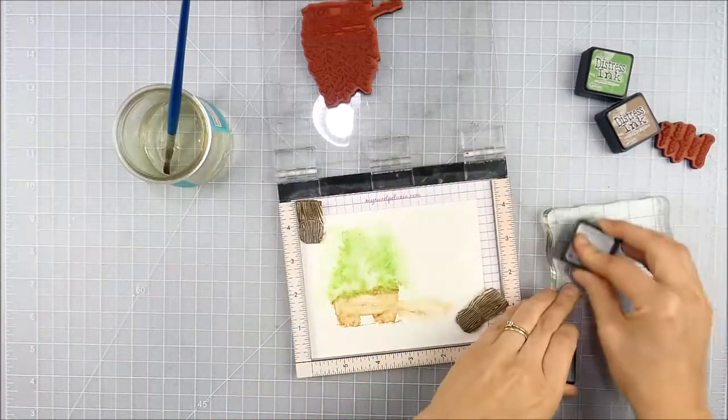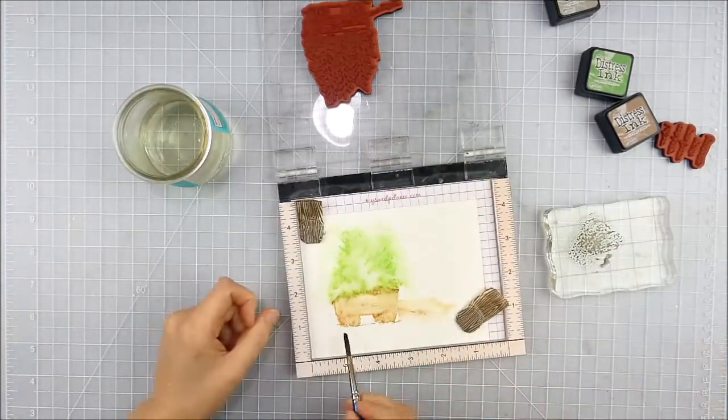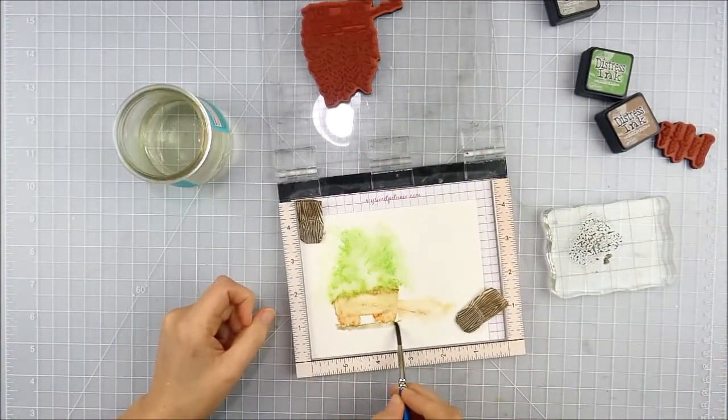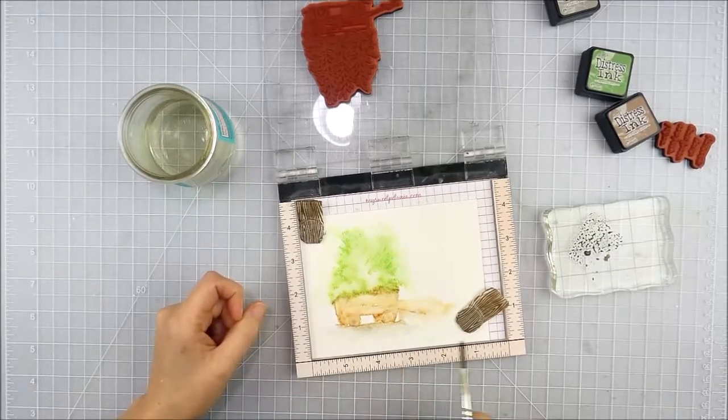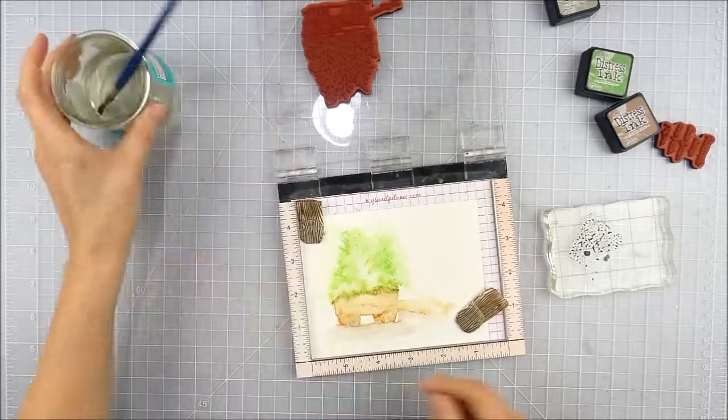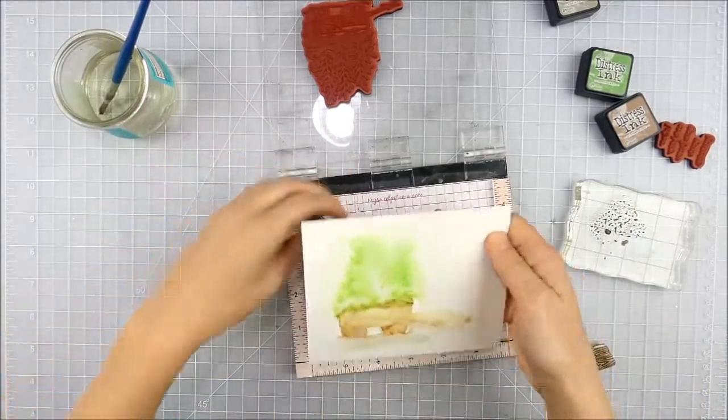Then I wanted to add a quick ground under this image, so I grabbed pumice stone distress ink. I just smooshed it onto a clear stamp block and then used a wet brush to pick up some of that ink and add a soft ground underneath.